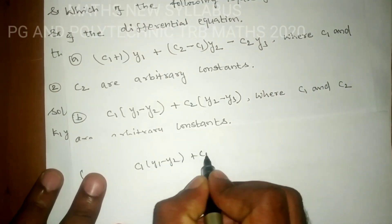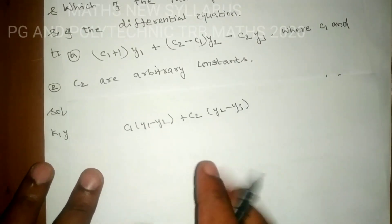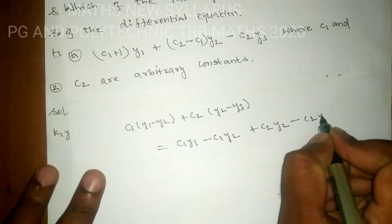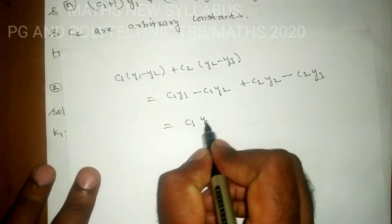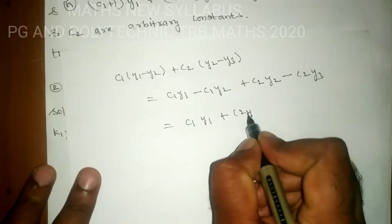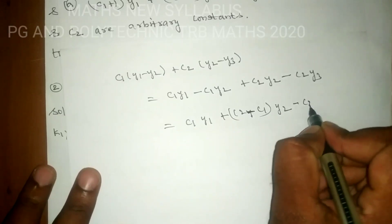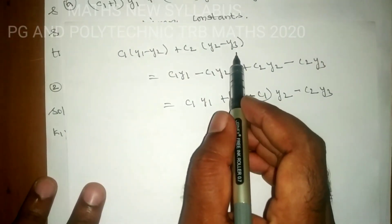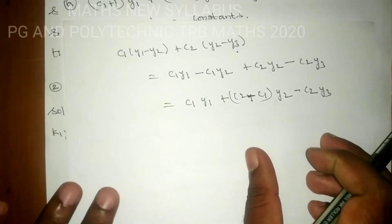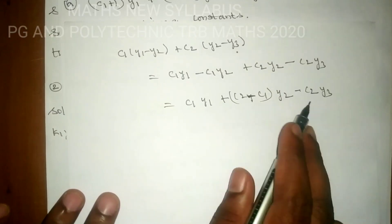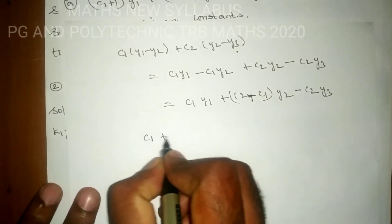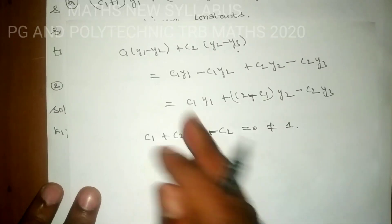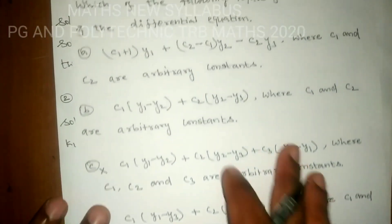For Option B: c1·(y1 − y2) + c2·(y2 − y3), expanding gives c1·y1 − c1·y2 + c2·y2 − c2·y3. The sum of the coefficients of y1, y2, y3 is c1 + (c2 − c1) + (−c2) = 0, which is not equal to 1. Therefore, this linear combination cannot be a general solution of the differential equation.